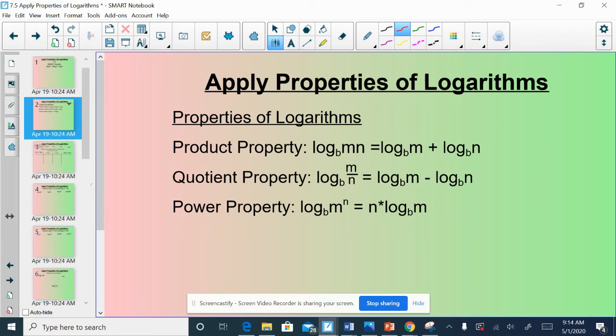Finally, we have the power property. This one states that if you have the log base b of some number being taken to an exponent, we can take that exponent and write it out front. So, we're going to be using all three of these properties throughout 7.5.